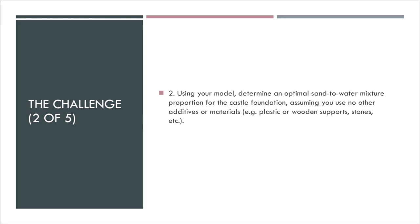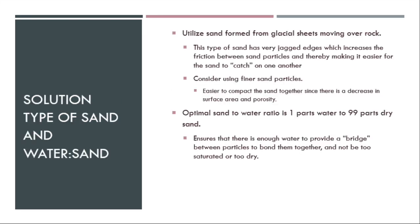So the second challenge to this problem was a solution for the type of sand and the water to sand ratio for this 3D geometric shape. When looking at different sources that discussed what is the best type of sand, there was one source that discussed how sand created from glacial sheets rubbing against each other was the best source of sand because these fine particles were actually rigid or jagged instead of them being very smooth and circular. This provides a way for friction to catch among the different sand particles so they could then hold with each other and catch instead of just sliding past each other.